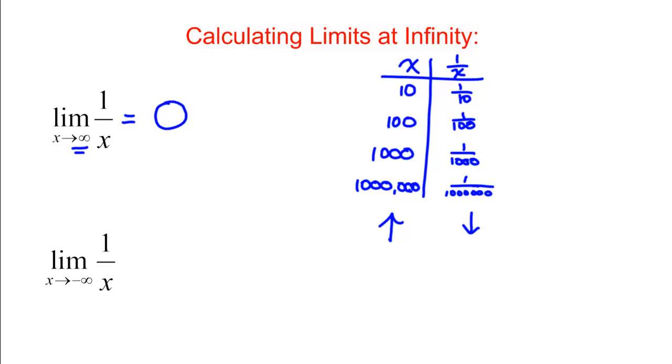That wasn't so hard to figure out. If we do the same thing with X approaching negative infinity of 1 over X, so if we plug in negative 10, we get negative a tenth, negative a hundred gives us negative one hundredth, negative a thousand gives us negative one thousandth, negative a million gives us negative a millionth, so again we're getting closer and closer to zero.